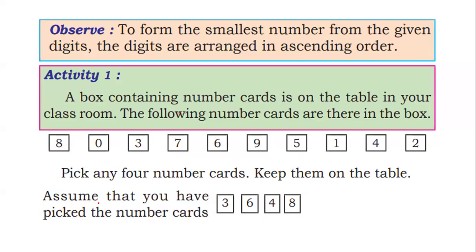Assume that you have been given the digit cards 3, 4, 6, 8. To form the smallest number using these digits, arrange them in ascending order. The result is 3, 4, 6, 8 — that is 3468, which is the smallest number.